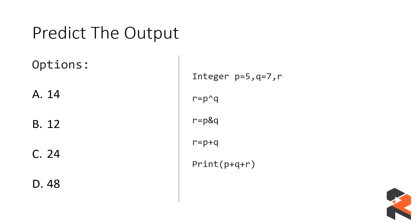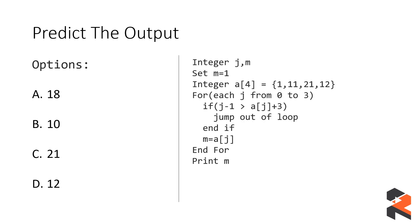Let's look at the next question. Here you again have a pseudo code with two variables — integer j and m — and you have to follow some steps mentioned in the code. Take a minute, pause the video, try to solve it on your own, and then come back. The code has an array of four integers: 1, 11, 21, and 12. A for loop runs with variable j running from 0 to 3.